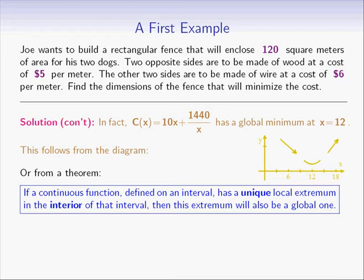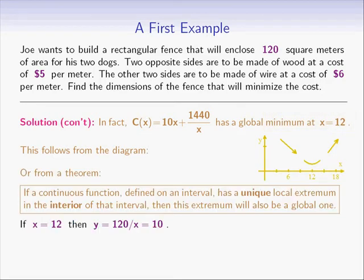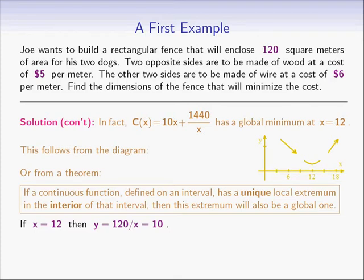Recall that x and y represent the dimensions of our rectangular fence. We know now that the cost is minimized when x equals 12. If x equals 12, then y, which is 120 over x, equals 10. Our conclusion is that the dimensions of the fence that minimize the cost are 12 meters for each side made of wood, and 10 meters for each side made of wire.